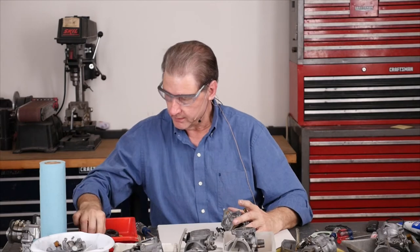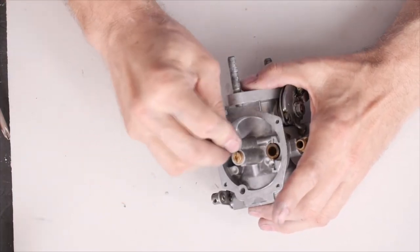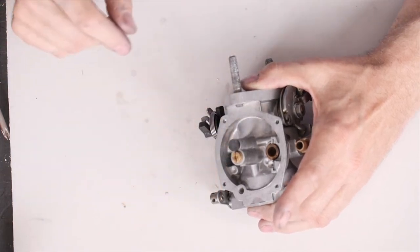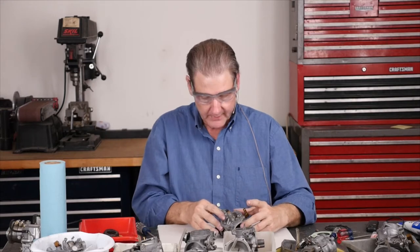Then one of the tricks, this little rubber plug. They're in the rebuild kit. Make sure you remember to put that rubber plug where the intermediate has to have that or the carb will never run right. So we got that ready.